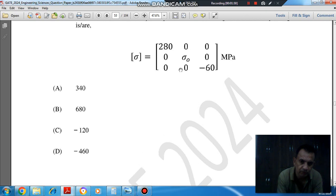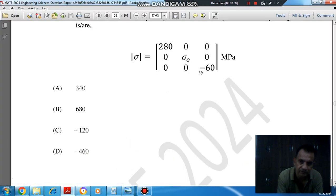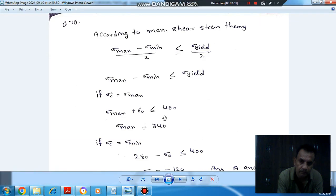If we assume sigma note as sigma maximum, then this minus 60 will be minimum.